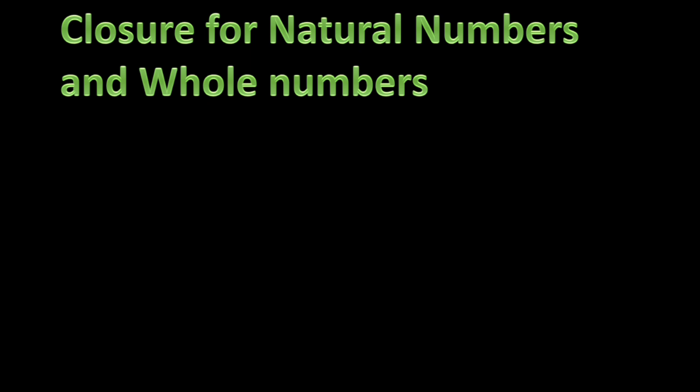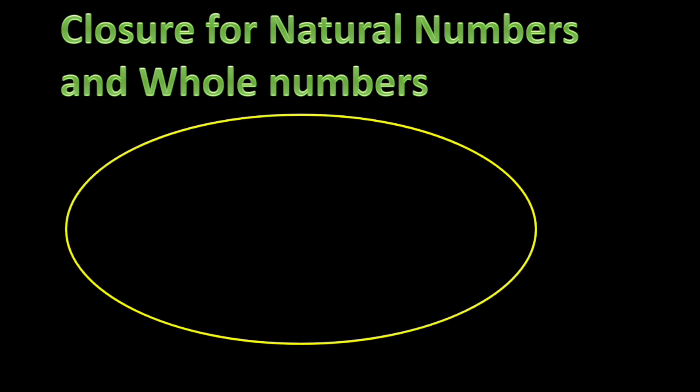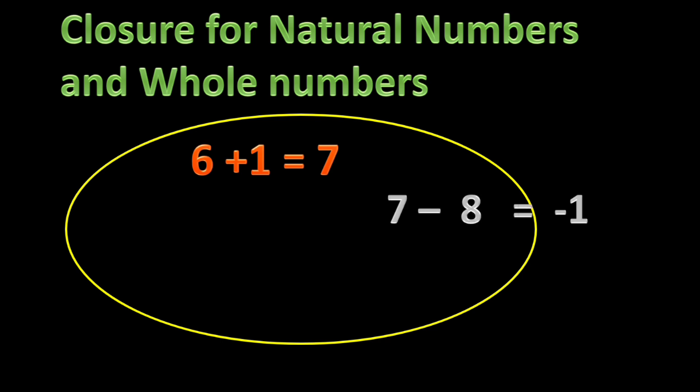First, closure for natural numbers and whole numbers. We have already learnt that all natural numbers are whole numbers, so we will discuss them together. In this whole number set, after doing an operation, let us check whether the resulting number also belongs to the same set. Here, 6 plus 1 equals 7. You take any two natural numbers or whole numbers — after addition the result also belongs to the same set. So addition is closed for natural numbers and whole numbers.